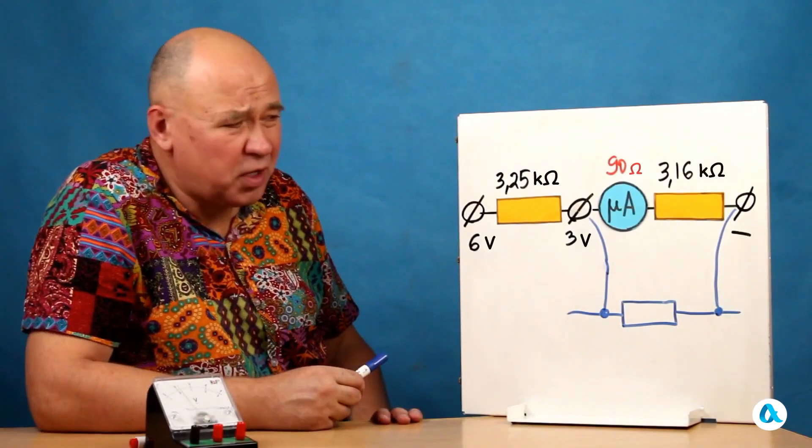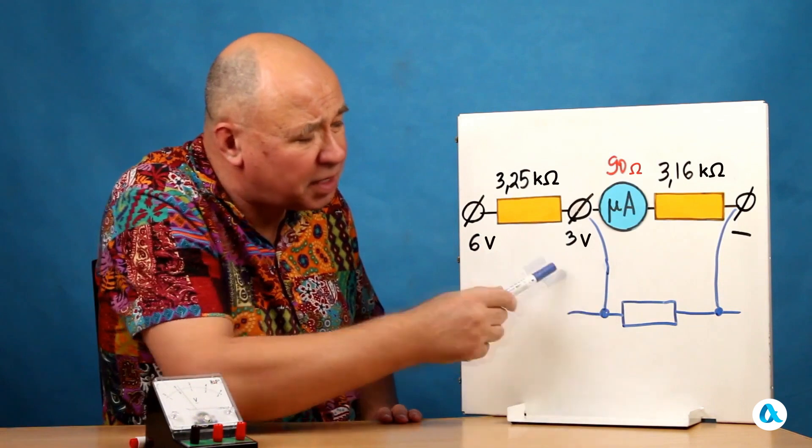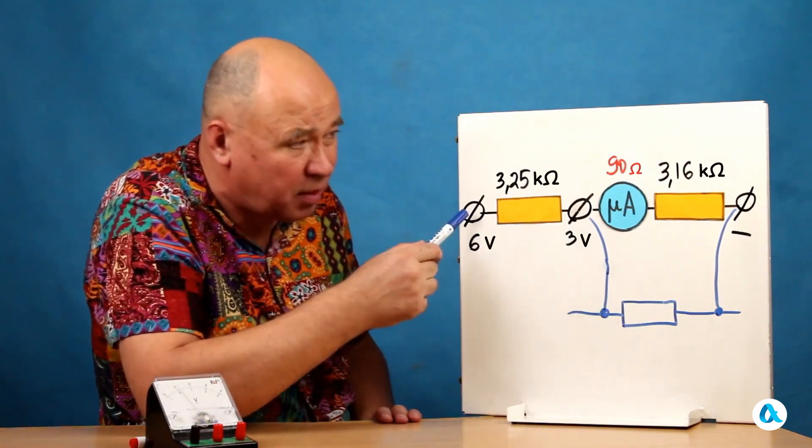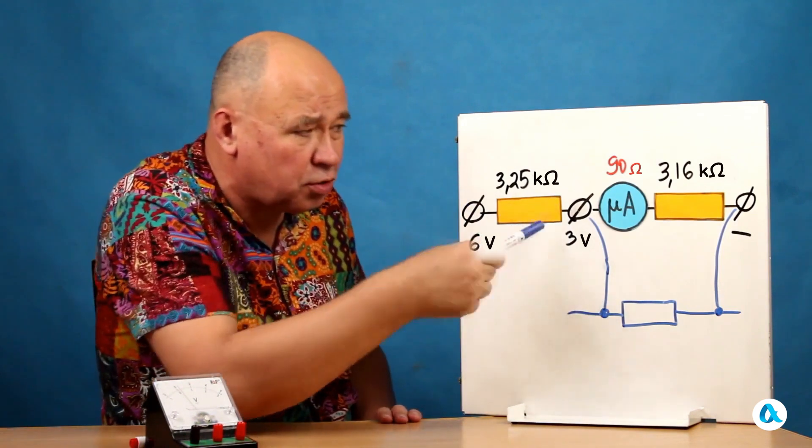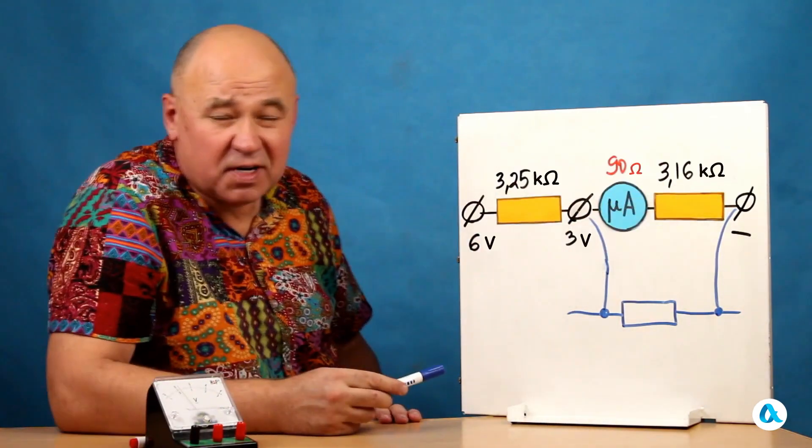But if I want to measure voltages up to 6 volts, then the load needs to be connected to this terminal. And here I have another 3 kilo ohms resistor. The total resistance of this circuit will double.